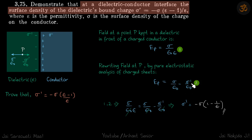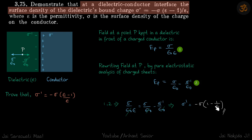So the electric field can now be written as sigma by epsilon minus sigma dash by epsilon. Comparing both expressions and cancelling epsilon, we get our result: the charge density sigma dash equals minus sigma times (1 minus 1 by epsilon).